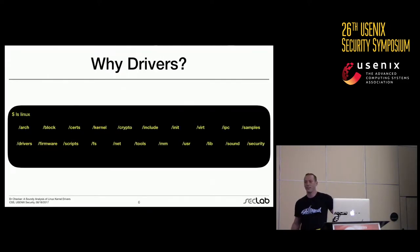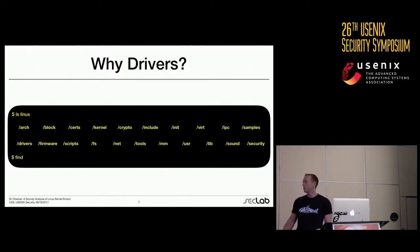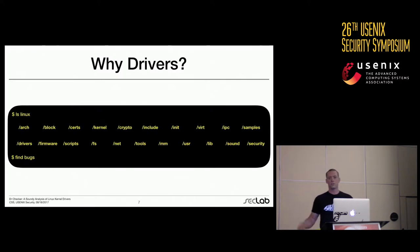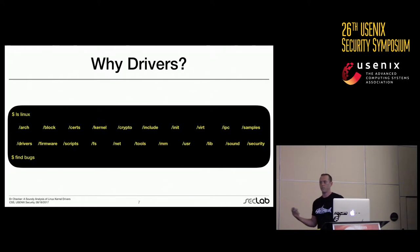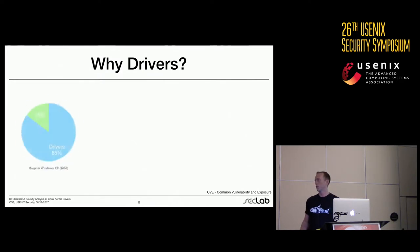So why did we decide to look at drivers? Machiri is a pretty excellent bug finder. He has tons of CVEs to his name and he's been looking at Linux kernel code for a while. It turns out that when you look for bugs in the Linux kernel, the drivers just jump out at you. There's a lot of third-party code in there. It's not as well audited. And historically, there's been a lot of work in this area that seems to indicate that most of the vulnerabilities are coming from third-party drivers.